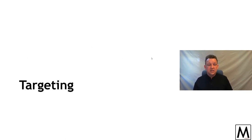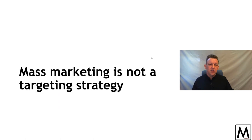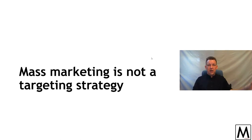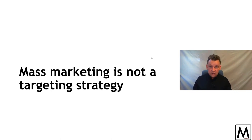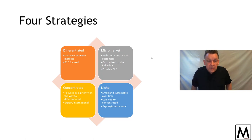Phase two is targeting. There are four targeting strategies. There is a fifth — mass marketing — which isn't a targeting strategy. Mass marketing is one thing to everyone; it's a business strategy, it's legitimate, but it is not a marketing targeting strategy. The four different ways to engage the marketplace are: micro, niche, concentrated, and differentiated.